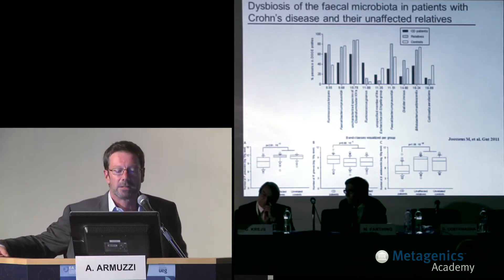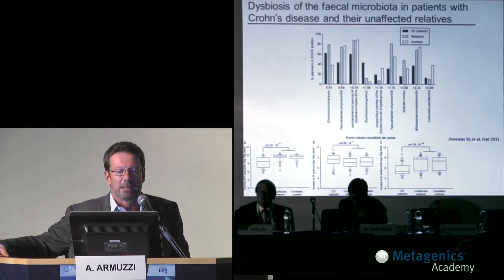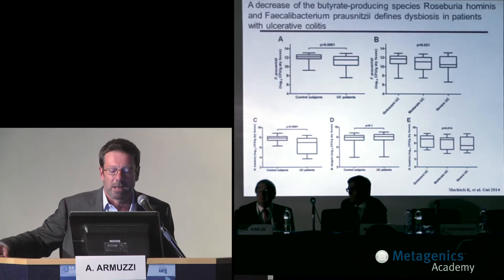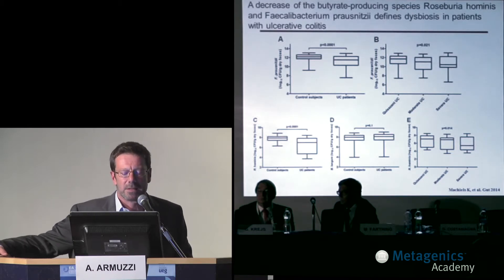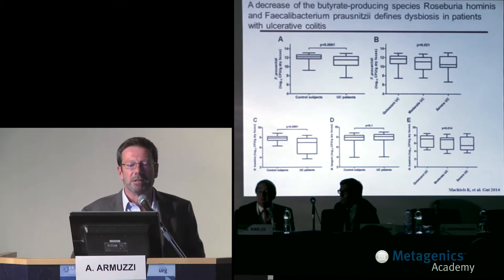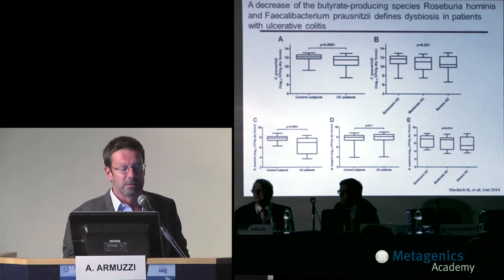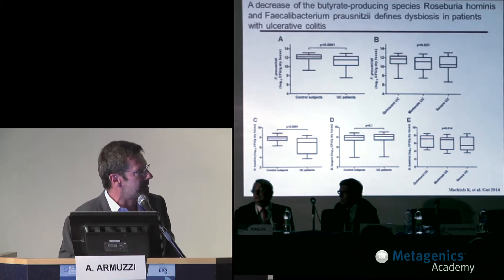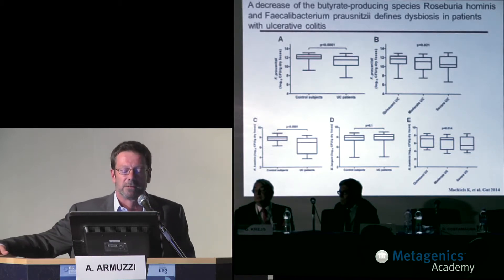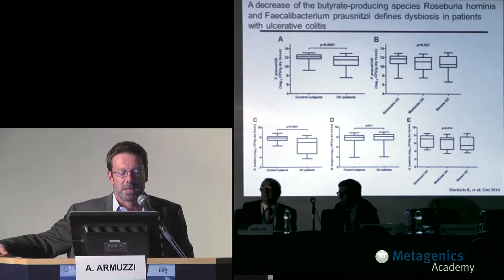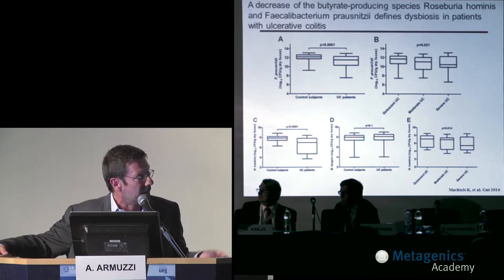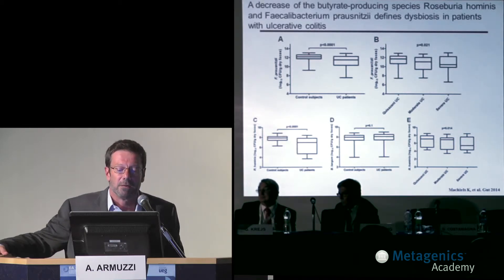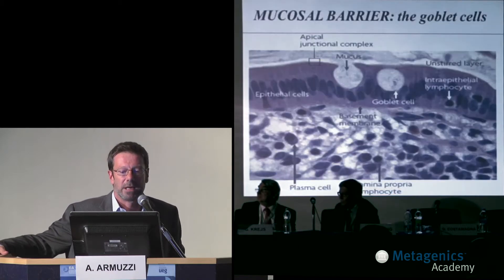Similarly, in patients with ulcerative colitis, a very recent study has shown a decrease of butyrate-producing species such as Roseburia hominis — butyrate being important for colonic integrity — with respect to control subjects. The difference was even evident according to the disease state of the patient, whether quiescent, moderate, or severe ulcerative colitis.